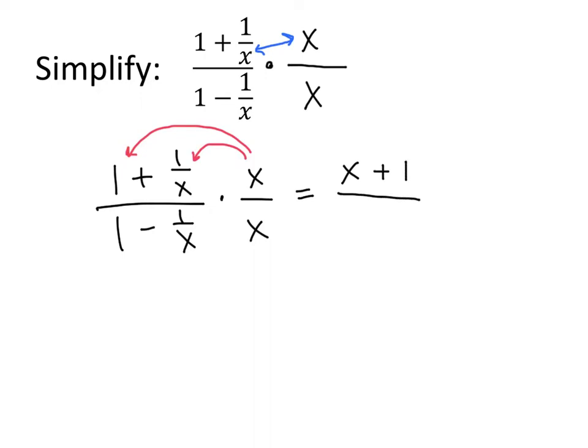On the bottom, once again we distribute x times 1 and x times minus 1 over x. When we multiply x times 1, we get x. And when we multiply x times minus 1 over x, these two x's divide out and we get minus 1. That's much simpler than what we started with.